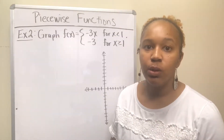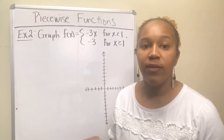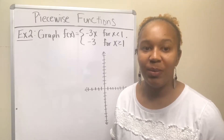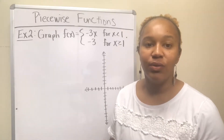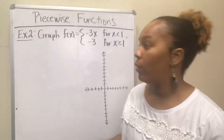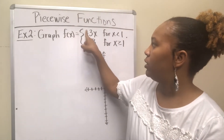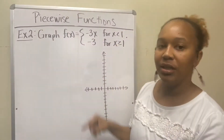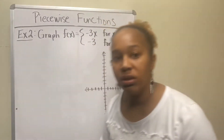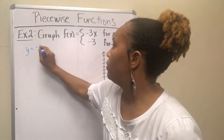For example 2, we want to graph a piecewise function. When you graph a piecewise function, you graph each function where it is defined on the domain, and you put those pieces together on the same graph. Our piecewise function here is f(x) equal to negative 3x for x less than 1, and f(x) equal to negative 3 for x greater than or equal to 1. We'll start with the first function, y equal to negative 3x.